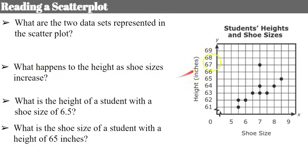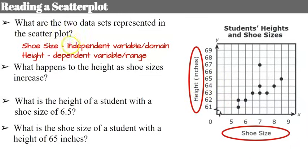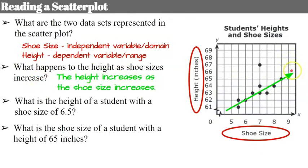Now let's practice reading a scatter plot. This example from our state exam represents students' heights and shoe sizes. The two datasets are shoe size and height — shoe size is the independent variable representing the domain, and height is the dependent variable representing the range. We're trying to determine if there is a relationship between shoe size and height. Looking at the graph, the height is increasing as the shoe size increases.